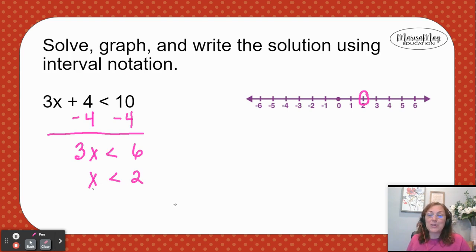Then we ask ourselves, do we want the numbers to the left of two or the numbers to the right of two? Since X is less than two, notice it's almost pointing to the left. So I would shade to the left of two on my number line.